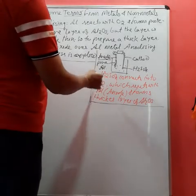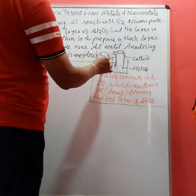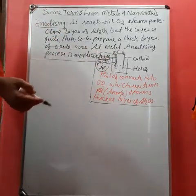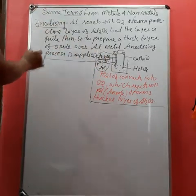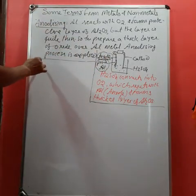That is the covering of aluminum oxide layer over the anode, that is pure aluminum. This is called anodizing.